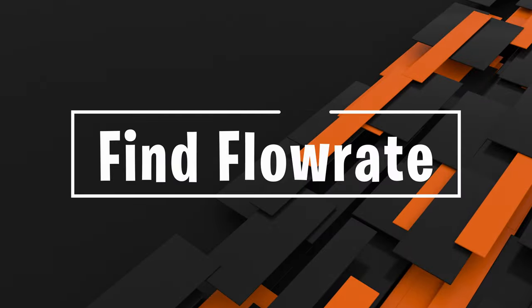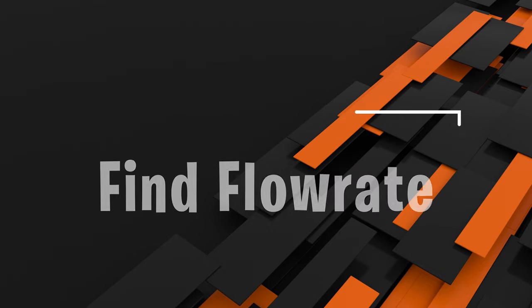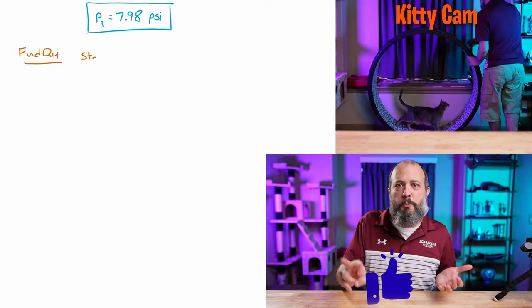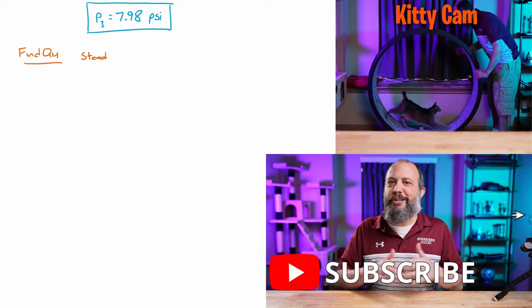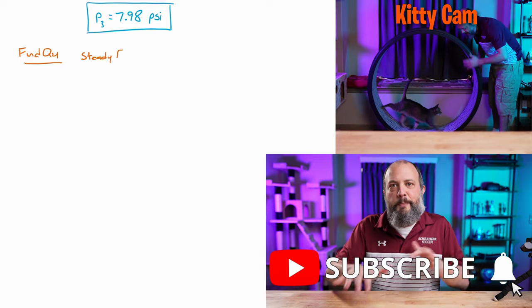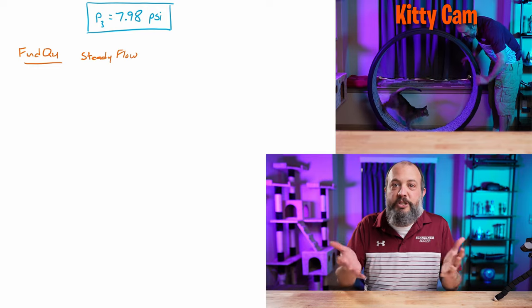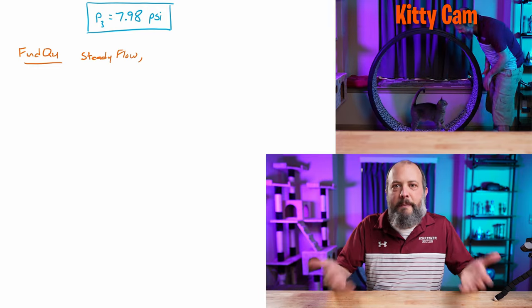On to part three, find the flow rate through outlet number four. And for this problem, we're not given anything. Pressure, velocity, nothing. And that's the clue that we're not going to be able to use Bernoulli's equation for this. We've got two unknowns. But since we know information about every other branch of the system, we should be able to use the continuity equation, which is a version of conservation of mass.